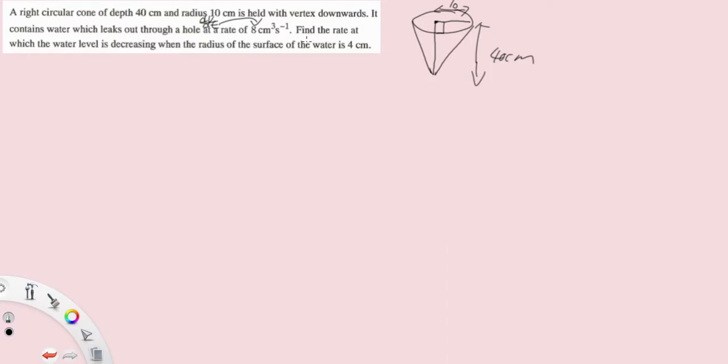Find the rate at which the water level is decreasing. So let's say we give the height of the water level as h, so we need to find dh/dt when the radius of the surface of water is 4 cm. So it introduces another variable now, when x equals 4.